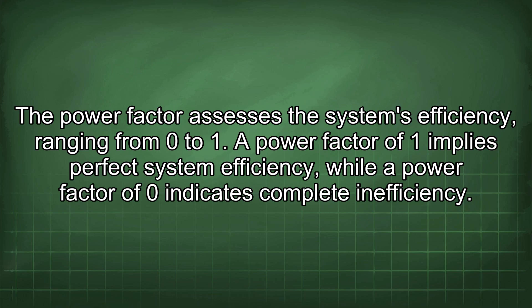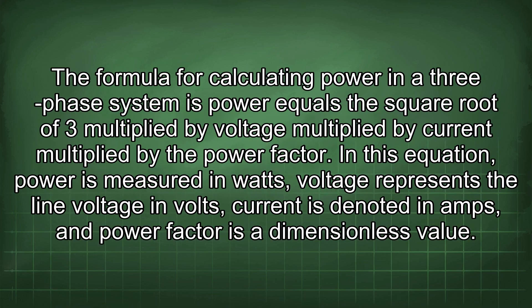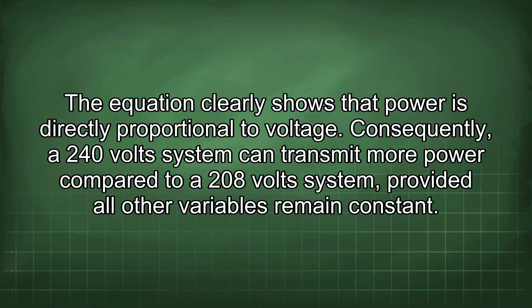A power factor of one implies perfect system efficiency, while a power factor of zero indicates complete inefficiency. The formula for calculating power in a three-phase system is: power equals the square root of three multiplied by voltage, multiplied by current, multiplied by the power factor. In this equation, power is measured in watts, voltage represents the line voltage in volts, current is in amps, and power factor is a dimensionless value. The equation clearly shows that power is directly proportional to voltage.